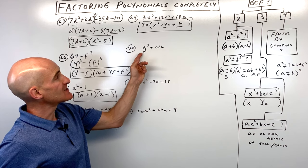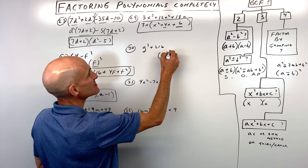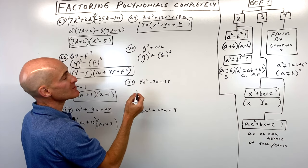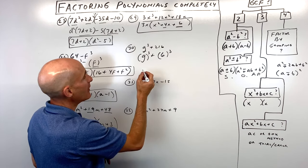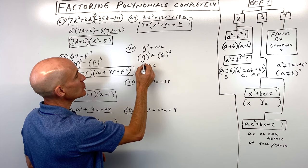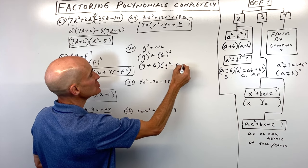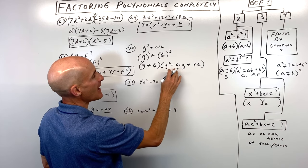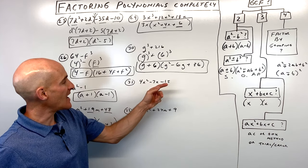Number thirty is a sum of two cubes, because 216 is 6 cubed — that's 6 times 6 times 6 — and g cubed is g times g times g. Using the SOAP sum of two cubes formula: g plus 6 times g squared minus 6g plus 36. Same, opposite, always positive.